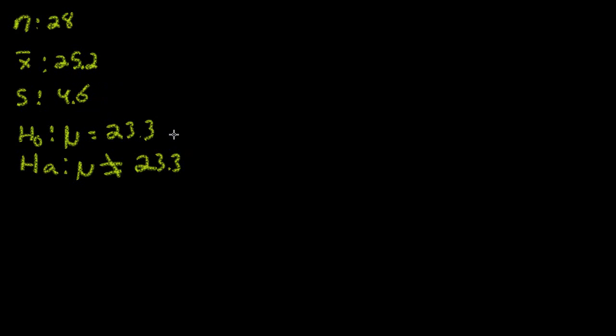When we are dealing with t-distributions, we usually use them when we do not know the population's mean and standard deviation. That is why we are going to be using the sample's standard deviation as an approximate for the population's. We have a null hypothesis as the true mean of the population equaling 23.3, but we have an alternative hypothesis that the true mean is actually not equal to 23.3.